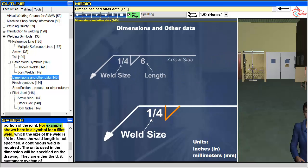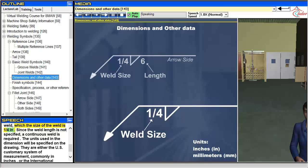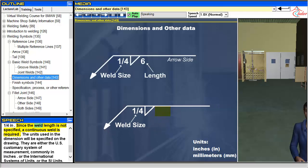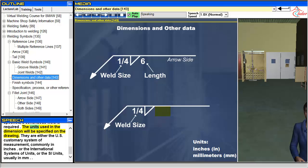For example, shown here is a symbol for a fillet weld which the size of the weld is a quarter inch. Since the weld length is not specified, a continuous weld is required.